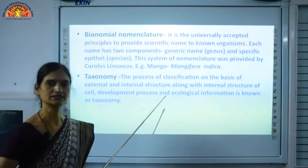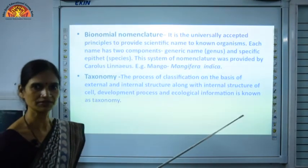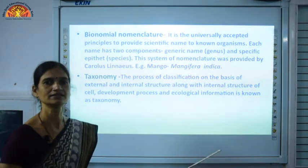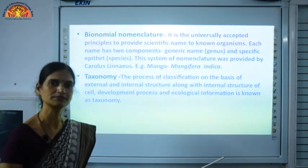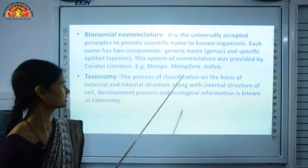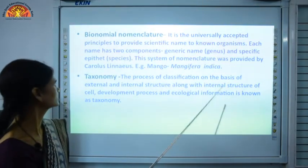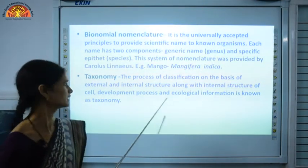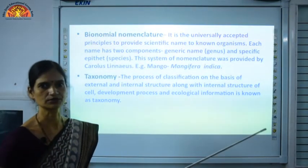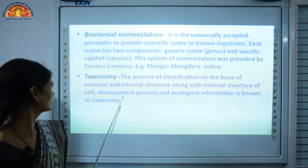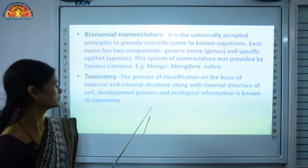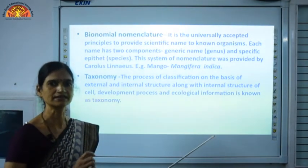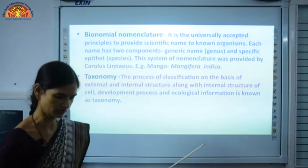There is another term — taxonomy. Taxonomy means to arrange, to classify, or to determine which group a particular organism belongs to. The process of classification on the basis of external and internal structure — we look at external and internal features, then put it in a particular group — this is what taxonomy is. Internal structure of cell, development process, and ecological information is shown in taxonomy, showing all the groups and categories.